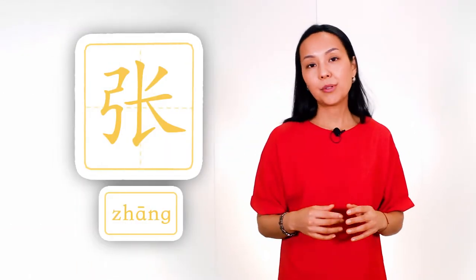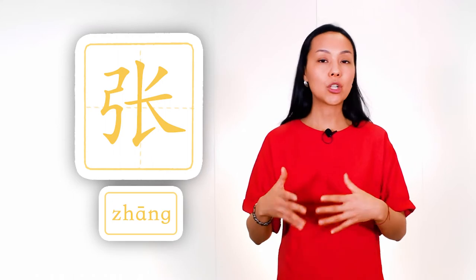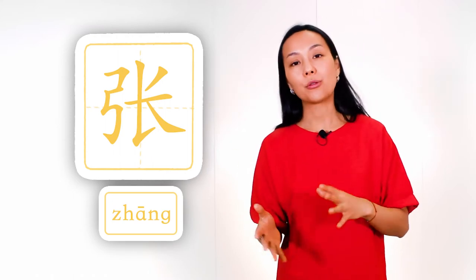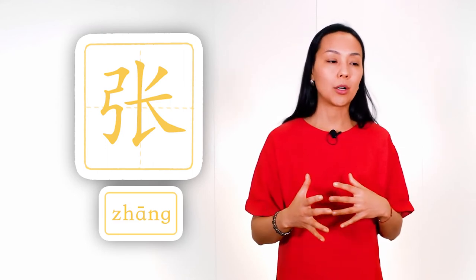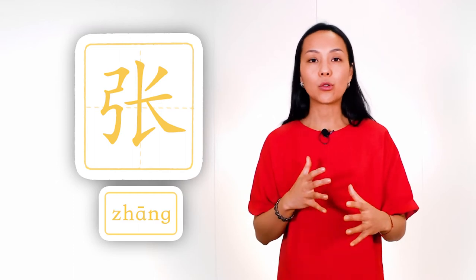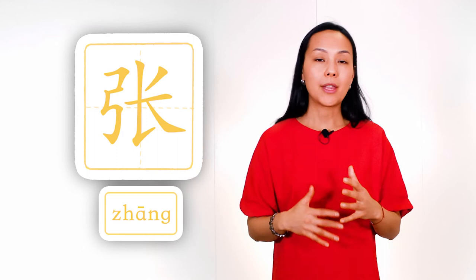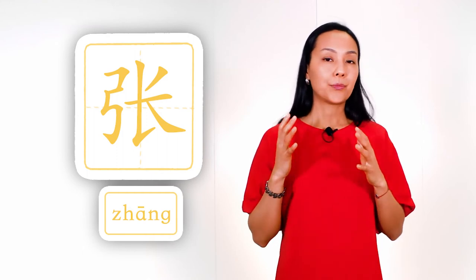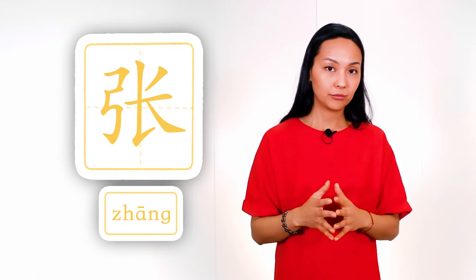Now let's study characters with our radical. The first example is the word 'to expand.' It also has another meaning — 'sheet,' for example a sheet of paper or sheet of anything paper-shaped. It's zhang. This radical appears in characters connected to things which are pulled, stretched, or which have a bow shape. That's why our word 'to expand' has radical bow.